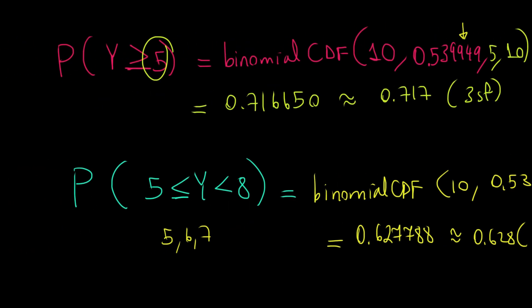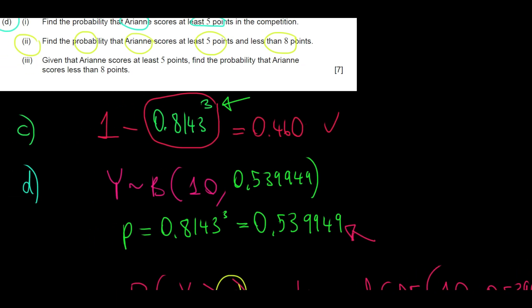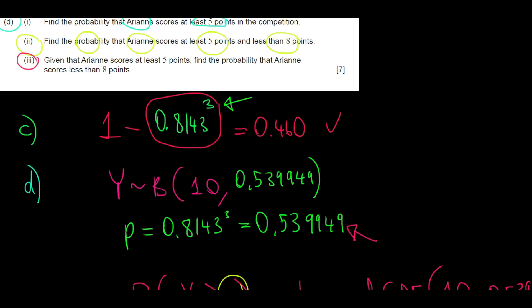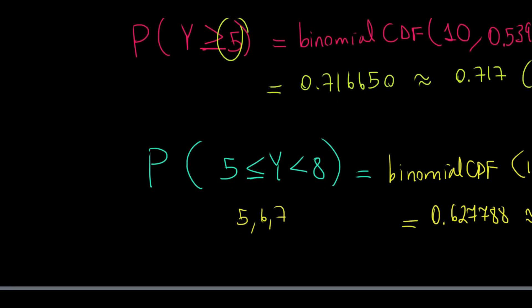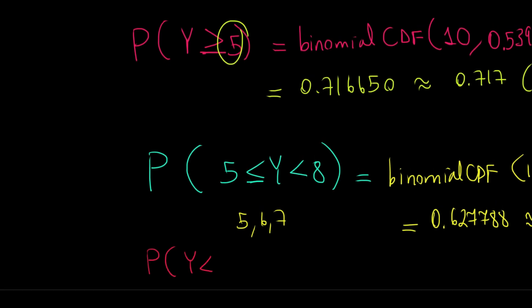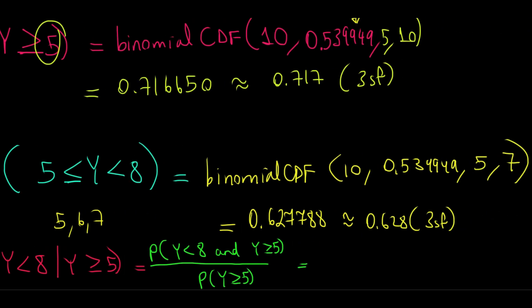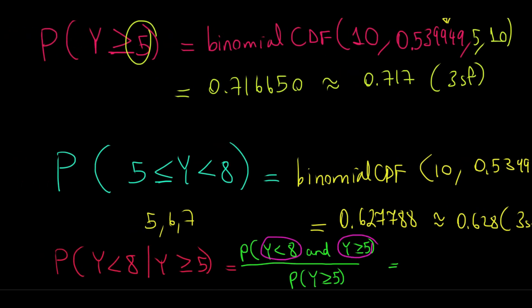Now with that being said, we go here and we try to finish the question. It says, given that Ariane scores at least five points, find the probability that she scores less than eight. So I'm going to put this into a conditional probability: Probability that Ariane scores less than eight, given that she scores at least five. So following the structure of the conditional probability formula, I would have probability that y is less than eight and y is greater than or equal to five divided by the probability that y is greater than or equal to five.